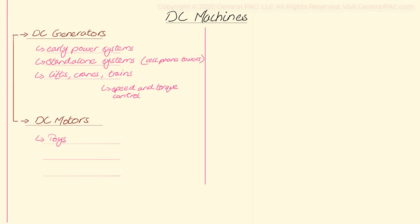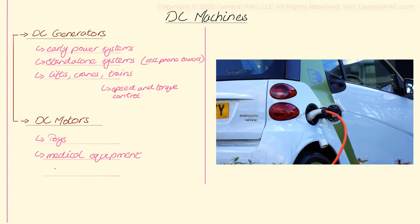DC motors are also used in all medical equipment which needs small and precise movements of fluids, such as a dialysis machine. They also have industrial uses as steel rolling mill motors and railway traction motors. Even power windows in automobiles, car fans, and starting motors in vehicles use DC motors. Brushless DC and brushed DC motors are used in electric machines and will be widely used in the future as well.